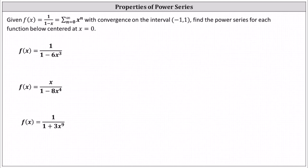Notice all the given functions do resemble the given function f of x equals one divided by the quantity one minus x. Our strategy will be to make sure all the functions are in this form, and then whatever we have in the position of x, we'll substitute that expression for x in the power series.